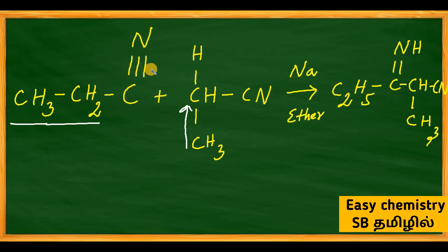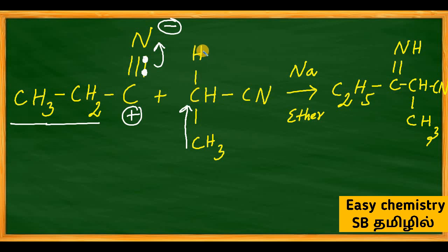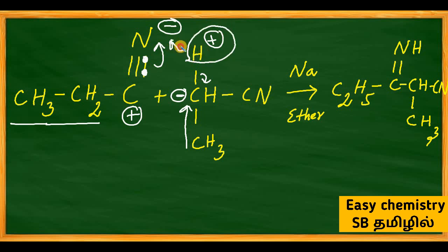Where is the electron negativity? It is on nitrogen. In the C≡N bond, electrons shift toward nitrogen, making nitrogen negatively charged. Carbon then feels a positive charge. On the other propanenitrile molecule, the bond breaks between the alpha carbon and alpha hydrogen. Carbon forms a negative charge — a carbanion — and hydrogen leaves as H⁺. The H⁺ moves toward the negatively charged nitrogen, while the carbanion carbon bonds to the electrophilic carbon of the nitrile group. The triple bond becomes a double bond, forming the product.